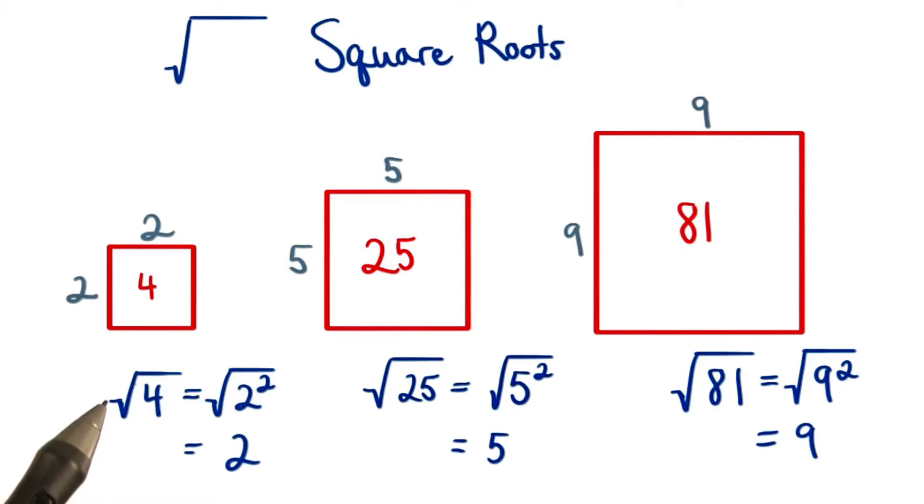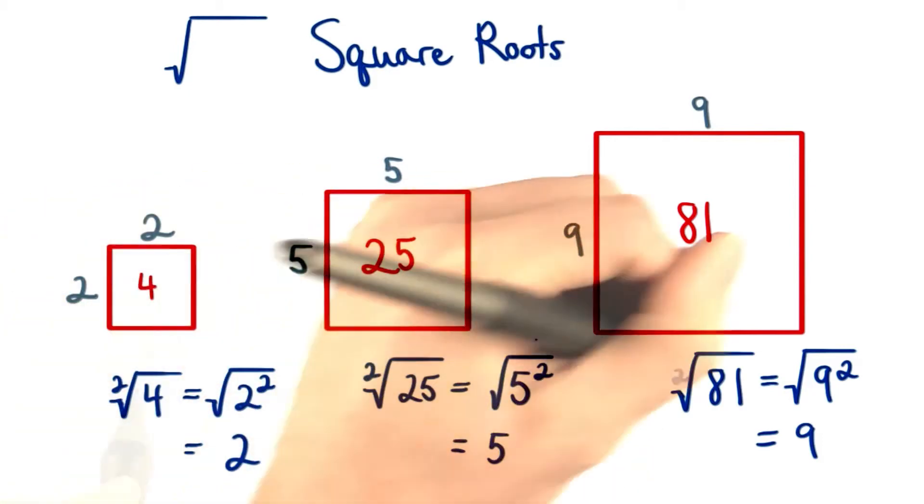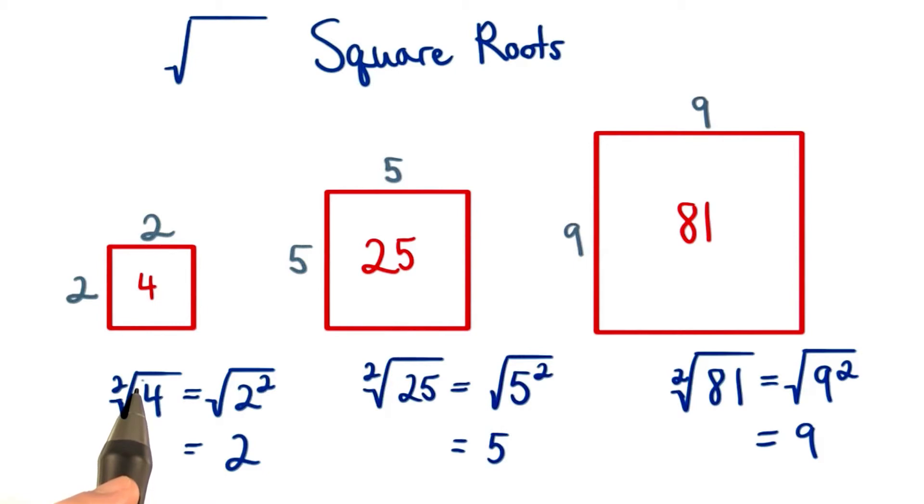This symbol is called a radical, and all three of these radicals are actually square roots. It's likely that you've seen these before, but you might not have known there's an index of 2 here. The index indicates the root we are taking, since we don't always have to take a square root.